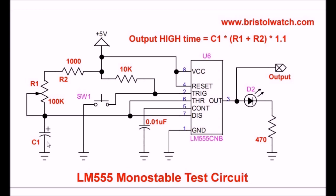When we have a negative-going pulse input on the trigger pin, this discharges capacitor C1, and the output pin 3 will go high, turning on our LED. When capacitor C1 charges up through R1 and R2, at a particular point pin 3 will go back off to 0. The duration of pin 3's on time is calculated by the formula: C1 times (R1 plus R2) times 1.1.